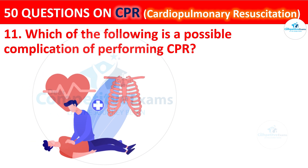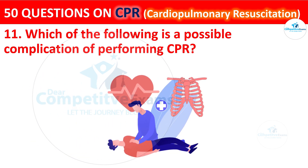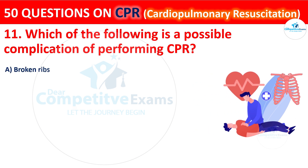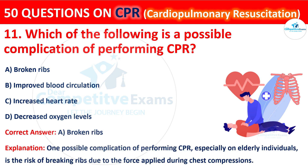Question 11: Which of the following is a possible complication of performing CPR? Your options are: Broken ribs, Improved blood circulation, Increased heart rate, or Decreased oxygen levels. The correct answer is A: Broken ribs. One possible complication of performing CPR — especially on elderly individuals — is the risk of breaking ribs due to the force applied during chest compressions.